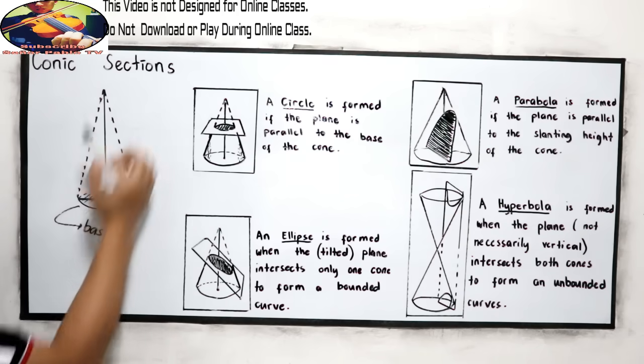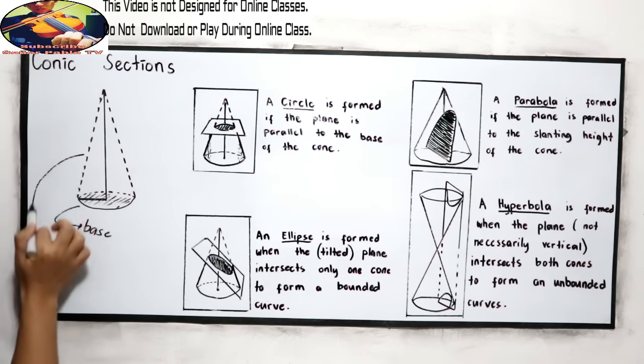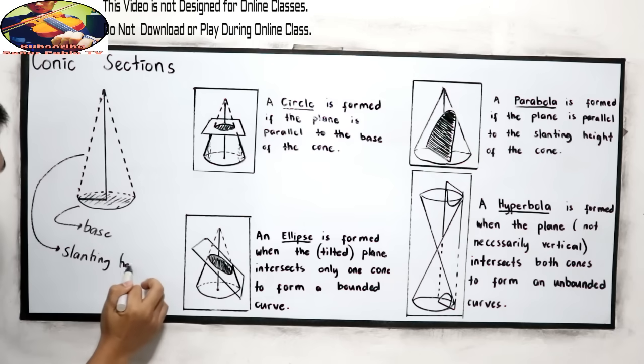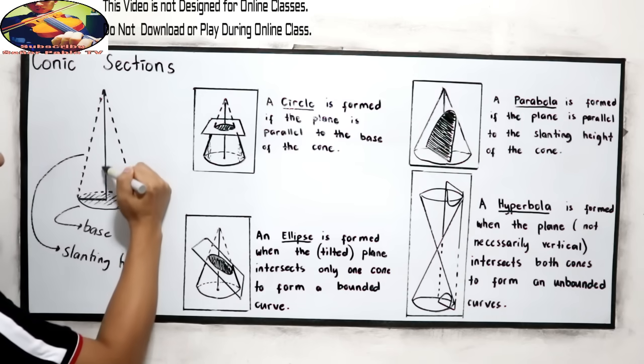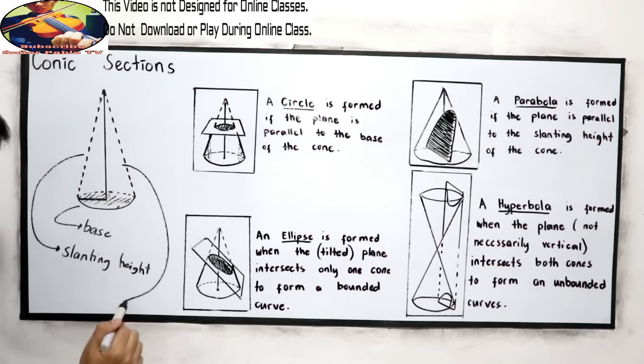Now, we have this line. This is called the slanting height. And this line is called the altitude, or the height. Those are the parts of our cone.